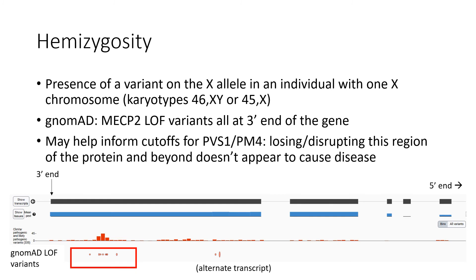Hemizygosity, which is the presence of a variant on the X chromosome in an individual who only has one X, may be informative in a manner similar to homozygosity. An interesting example to look at in gnomAD is MECP2, related to Rett syndrome, for which females and the few affected males that have been described are typically affected at an early age with phenotypes that would lead to exclusion from the gnomAD cohort.